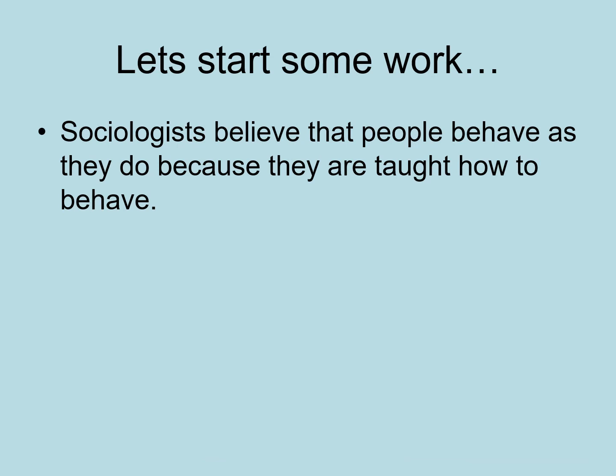Sociologists believe that people behave as they do because they are taught how to behave, and how they are taught is based on what they have in their society — whether it's their family, the education system, the criminal justice system, the media, or their religion. All of this affects how they behave.